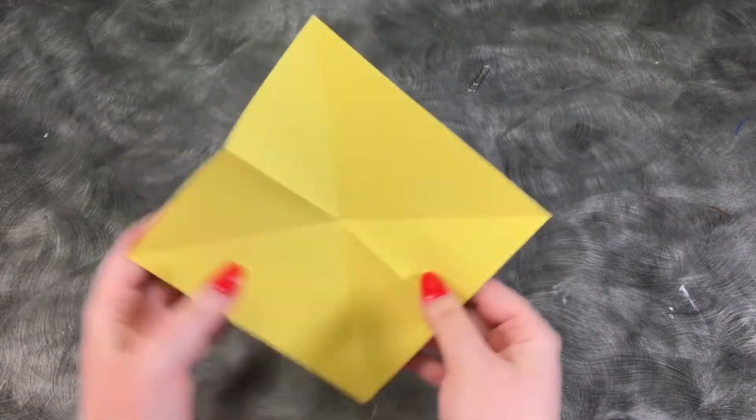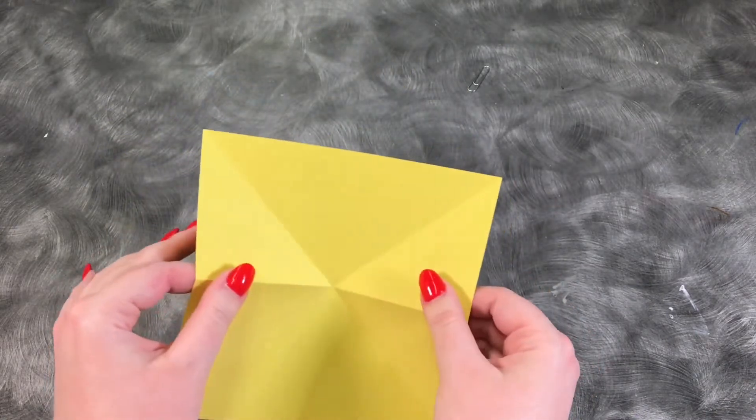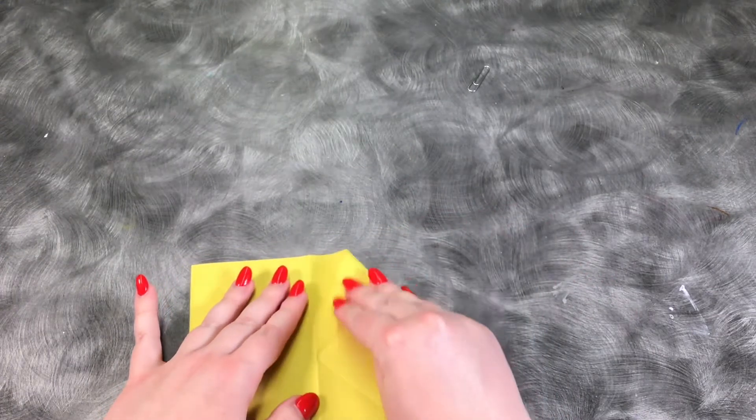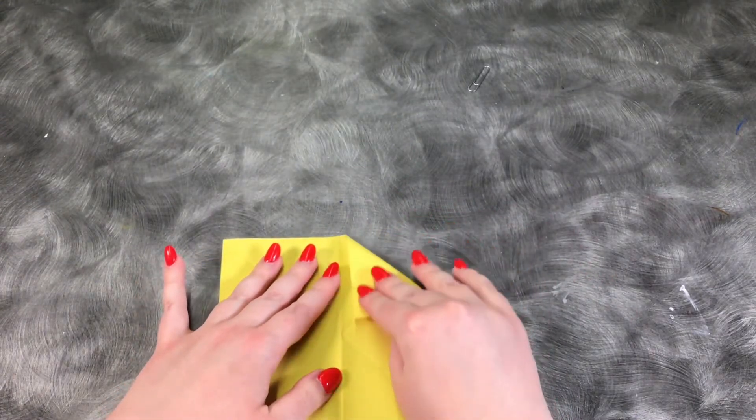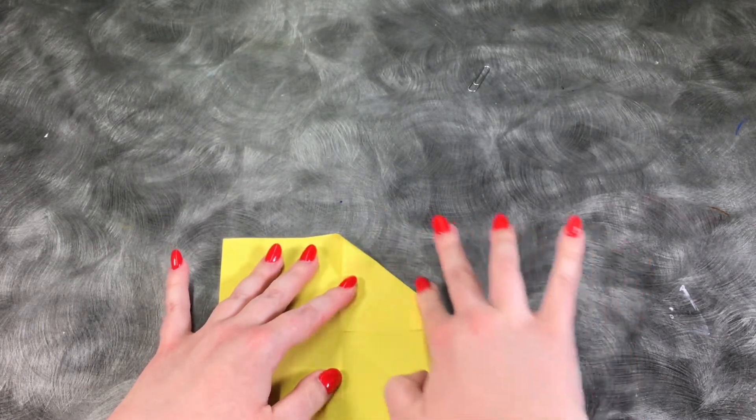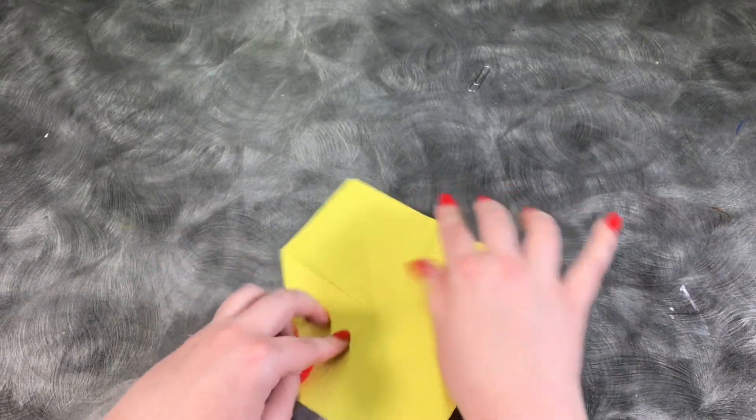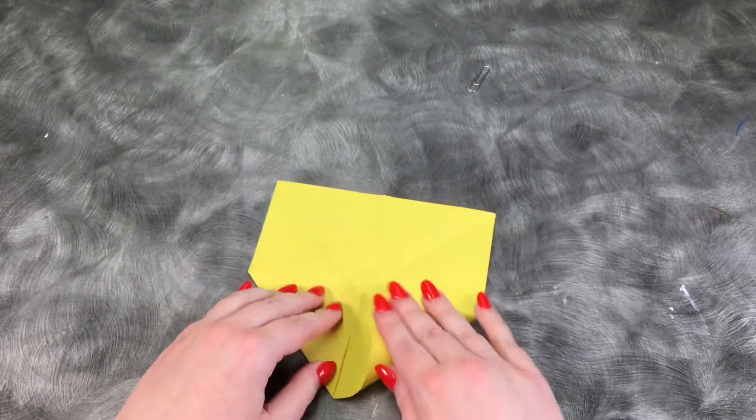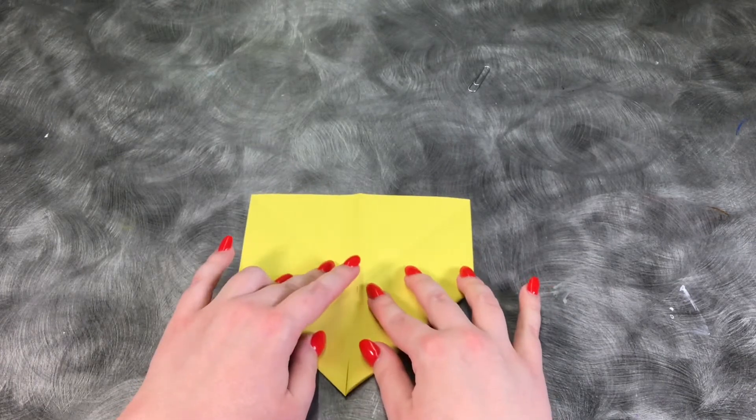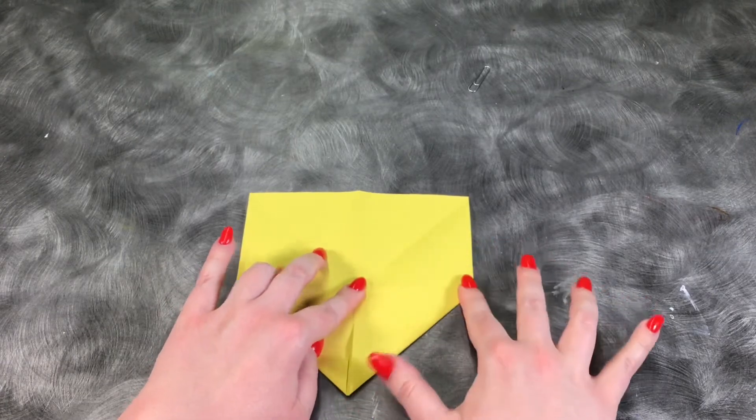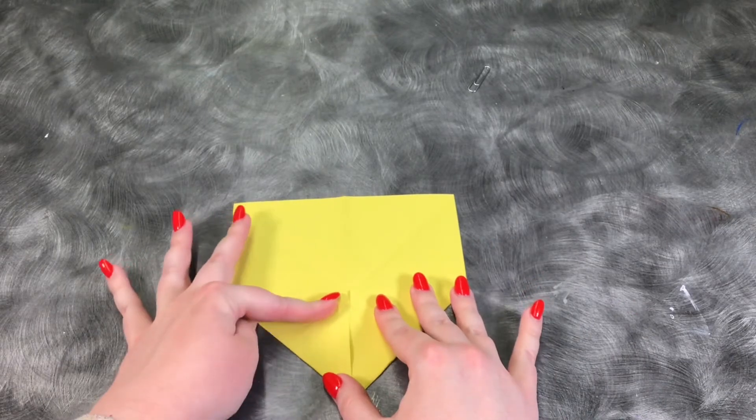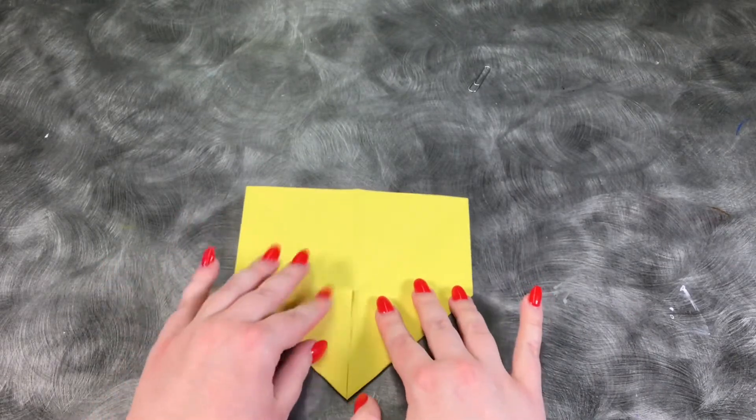Now you see how it kind of wants to fold in like that. That's going to come in a later step. But for right now, go ahead and take the top corner and bring it into the center and crease. And then do the same on this side. Bring it in and crease.